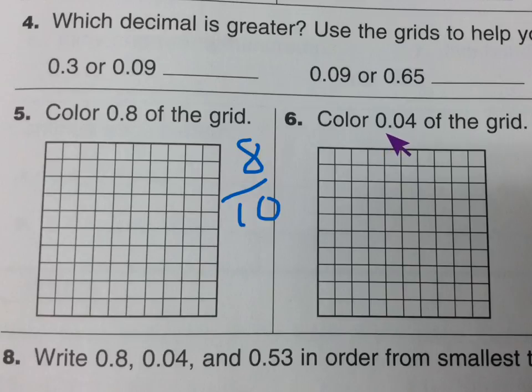Over here, we have point zero four or four hundredths. So this would look like 4/100 as a fraction. Which means we need to color in four out of one hundred of these squares.